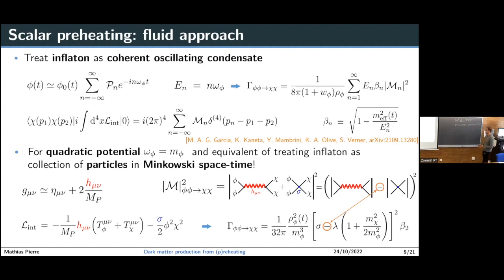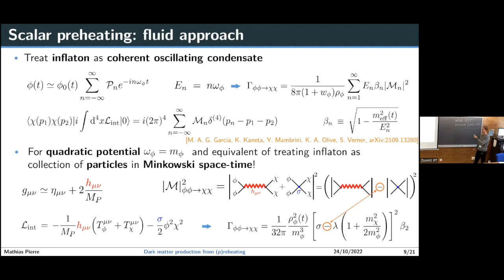For the specific case where the potential is close to quadratic near the minimum, the frequency is just given by the inflaton mass. This construction is equivalent to treating the inflaton condensate as a collection of inflaton quanta at rest, producing dark matter particles. To compute the matrix element we expand the metric in terms of the background plus small perturbations treated as the graviton, and the matrix element for dark matter production has two contributions: one from the massive graviton exchange and one from the direct coupling sigma.